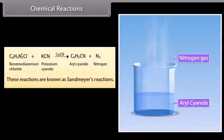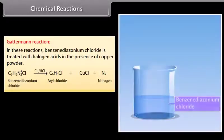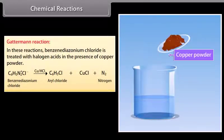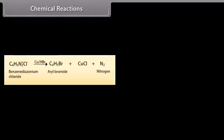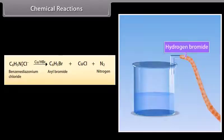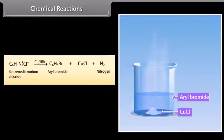Gattermann reaction: Benzene diazonium chloride is treated with halogen acids in the presence of copper powder. Benzene diazonium chloride reacts with hydrochloric acid and copper powder to yield aryl chloride and liberate nitrogen gas. Benzene diazonium chloride reacts with hydrogen bromide and copper powder to yield aryl bromide and liberate nitrogen gas.